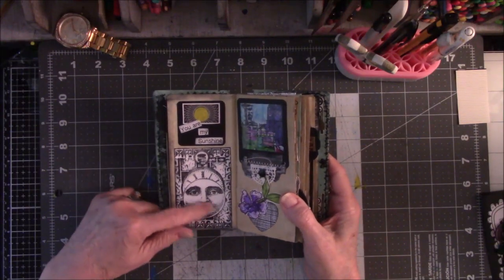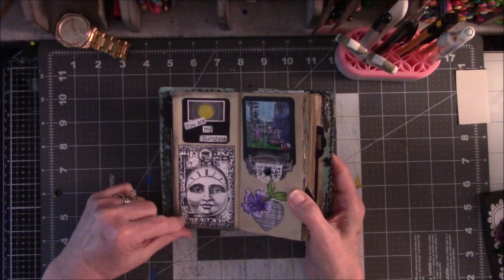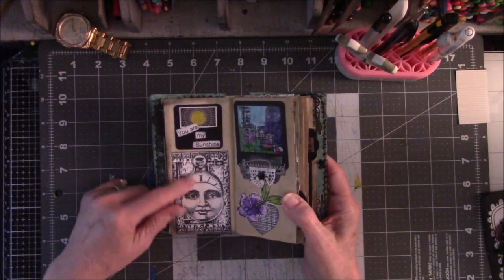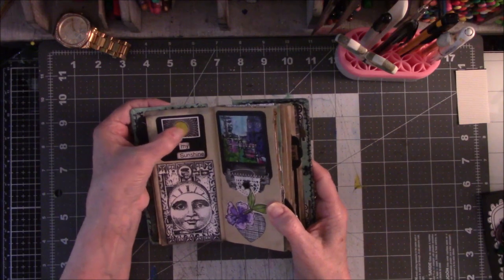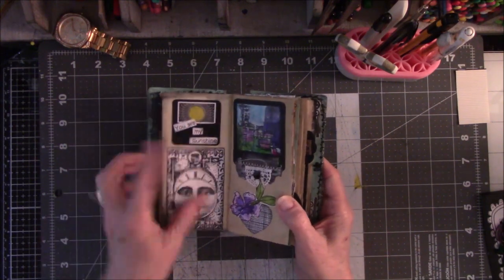This, I think, is a stamp that belongs to me that I have no idea if I was gifted or I bought it, it doesn't really matter. This was a picture out of something, so all I did was just color in with the yellow for the sun, for You Are My Sunshine.